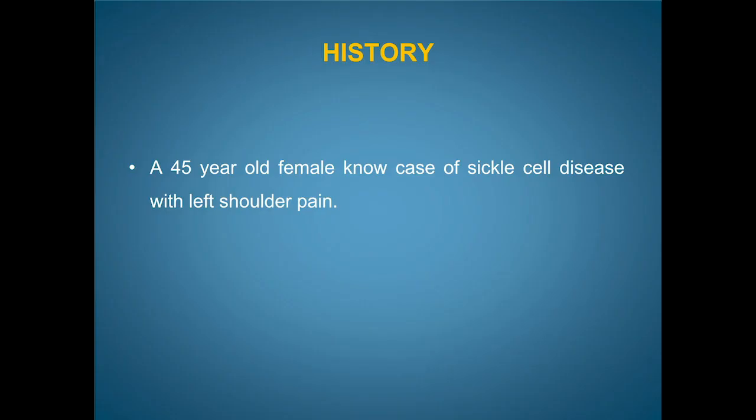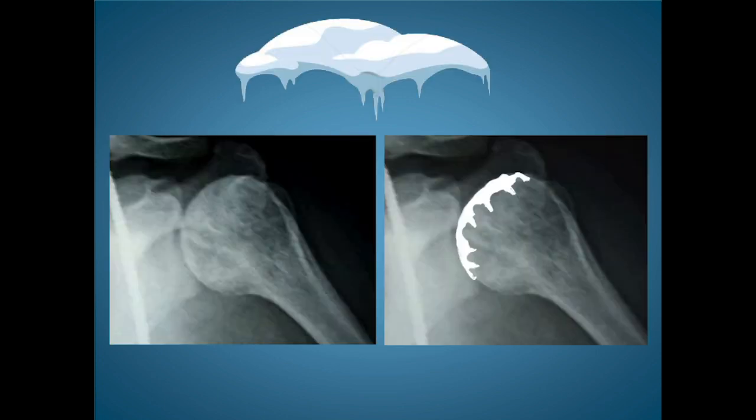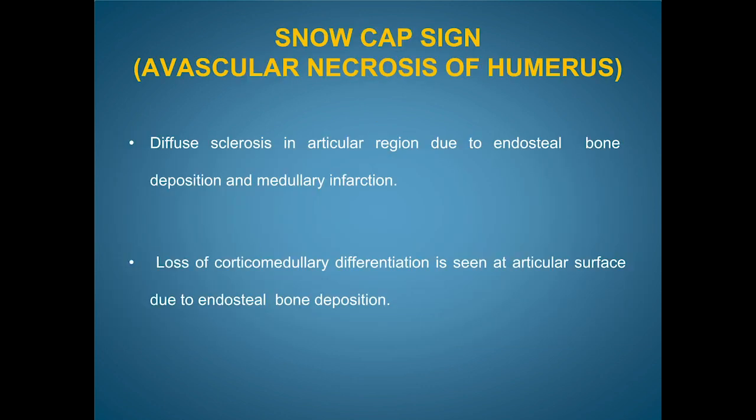A 45-year-old female patient presented with left shoulder pain. She is a known case of sickle cell disease. The radiograph shows dense sclerosis of the humeral head, which is secondary to endosteal bone deposition, comparable with the snow-capped ice mountains — also called the snow cap sign. This diffuse sclerosis of the articular region is due to medullary infarction and endosteal bone deposition.